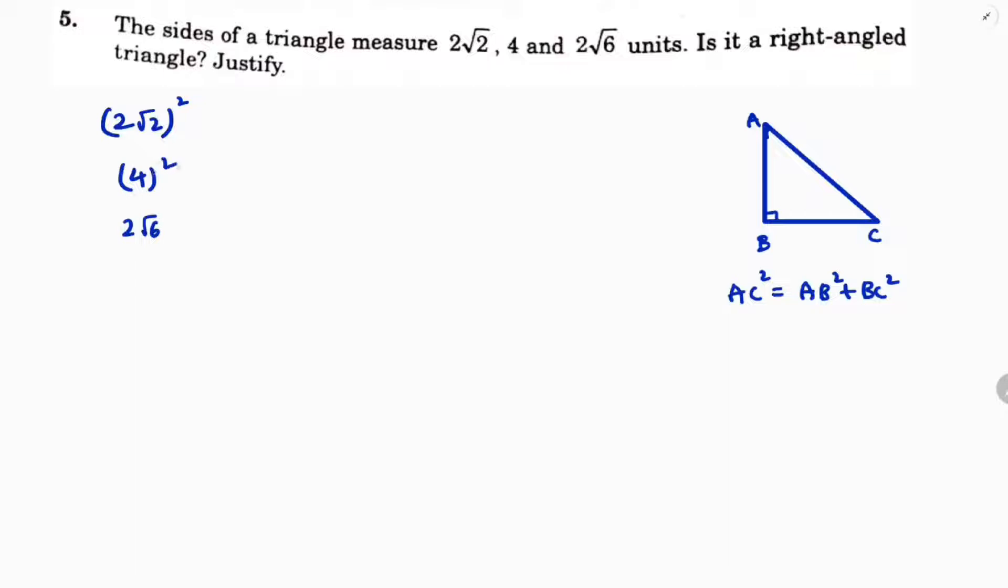Squaring all the sides: 4 square is 16, 2√2 whole square - 2 square is 4, root 2 whole square is 2.